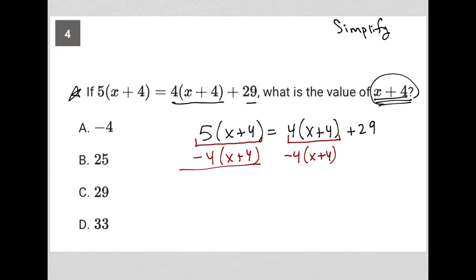5 times x plus 4 minus 4 times x plus 4 is just 1 times x plus 4. That's gone. And that would be equal to 29, right? If I bring this 29 down.